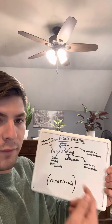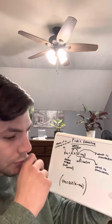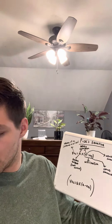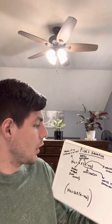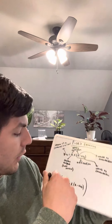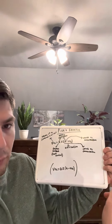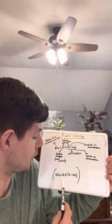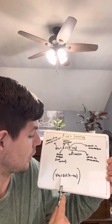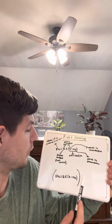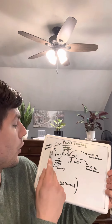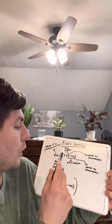Today I wanted to relate the Fick equation in, since we're still going over our respiratory physiology. So the Fick equation is — I wrote it down here so you can kind of see it a little bit better — it's VO2 equals Q times (A minus VO2). The VO2 is the volume of oxygen consumed and utilized.